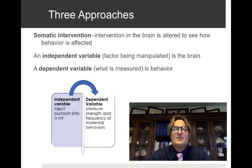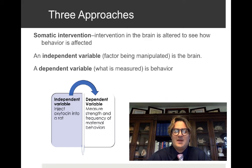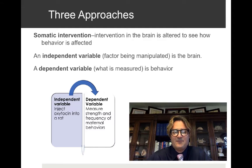A somatic intervention is one in which the brain is altered to see how behavior is affected. The independent variable is the brain, and the dependent variable measured is behavior. A great example is research in which oxytocin — not oxycontin the narcotic, but the hormone oxytocin — is injected into a rat's brain to measure the strength and frequency of maternal behaviors.